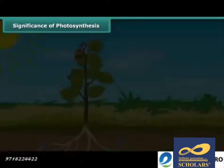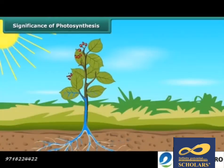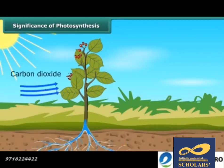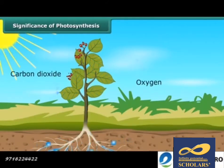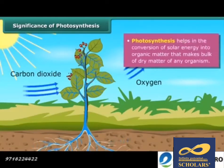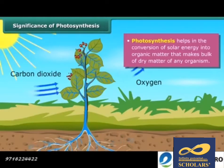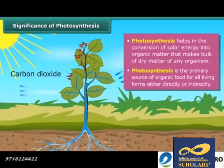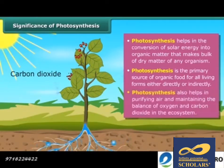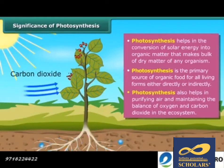Till now we have learnt about the photosynthesis process, but now the question is, what is its significance? Photosynthesis is an important and vital process for life on this planet. This process helps in the conversion of solar energy into organic matter, linking the physical and biological world. It is the primary source of organic food for all living forms, either directly or indirectly. It also helps in purifying air and maintaining the balance of oxygen and carbon dioxide in the ecosystem.